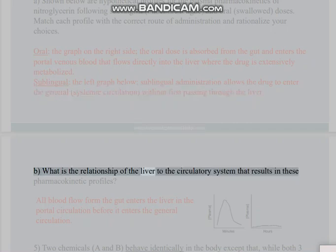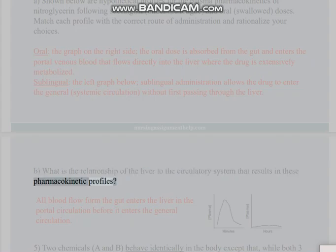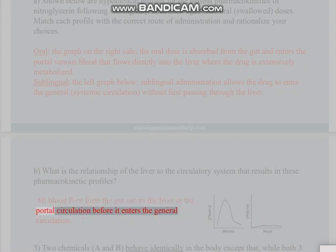Part B: What is the relationship of the liver to the circulatory system that results in these pharmacokinetic profiles? All blood flow from the gut enters the liver in the portal circulation before it enters the general circulation.